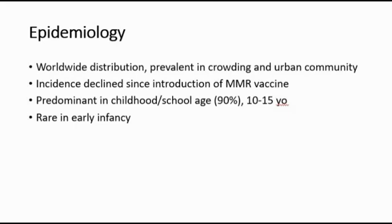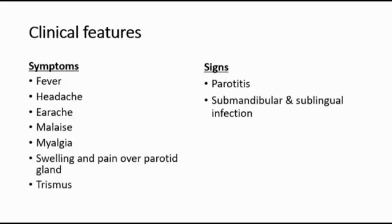Mumps is rare in early infancy, probably due to persisting maternal antibodies. For clinical features, the incubation period is normally 14 to 21 days. The period of infectivity is seven days — two to three days before the onset of symptoms and three days afterwards, making a total of seven days.